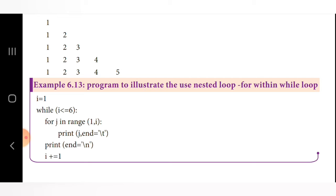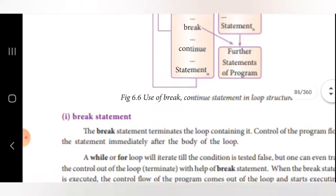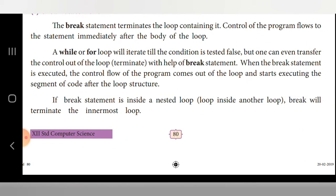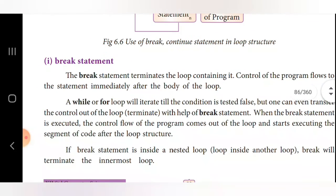When the value of i is 7, 7 <= 6 is false and the program execution stops, showing the number pattern output. When we use break inside the inner for loop, it exits only the inner loop and transfers control to the outer while loop. Break will terminate only the innermost loop, not the whole nested structure.